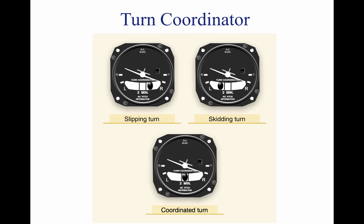During coordinated straight and level flight, the force of gravity causes the ball to rest in the lowest part of the tube, centered between the reference lines. Coordinated flight is maintained by keeping the ball centered. If the ball is not centered, it can be centered by using the rudder. To center the ball, apply rudder pressure on the side to which the ball is deflected — use the simple rule 'step on the ball' to remember which rudder pedal to press. If aileron and rudder are coordinated during a turn, the ball remains centered in the tube. If aerodynamic forces are unbalanced, the ball moves away from the center of the tube.